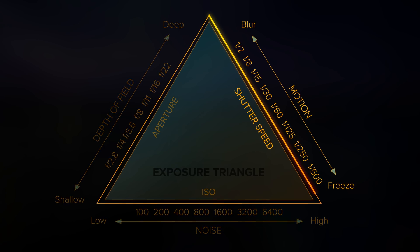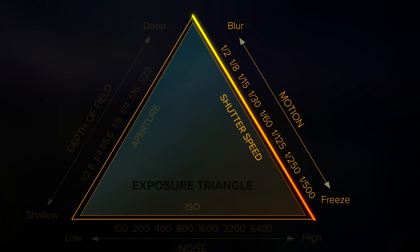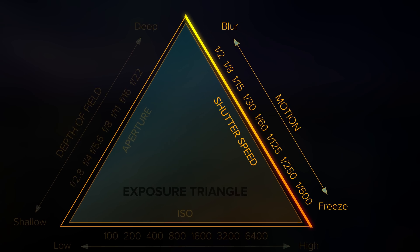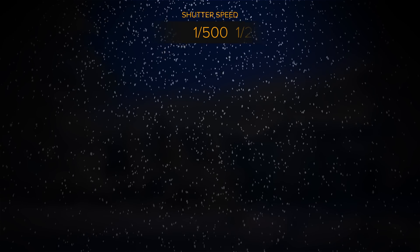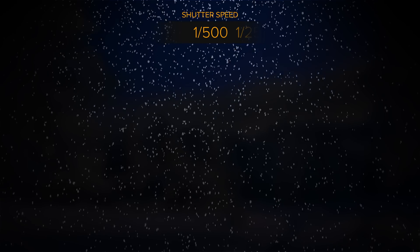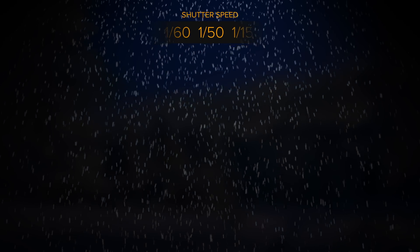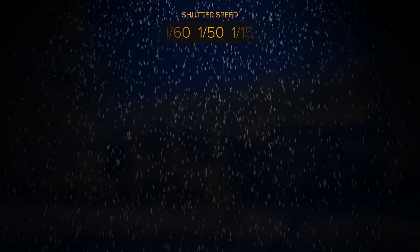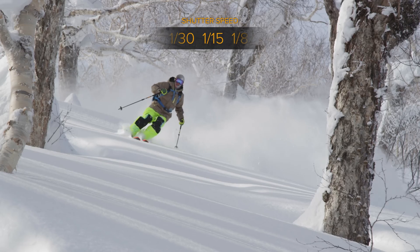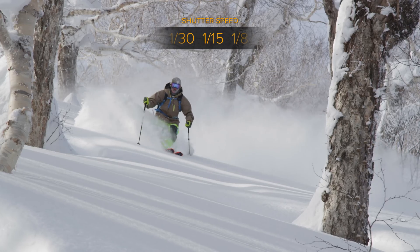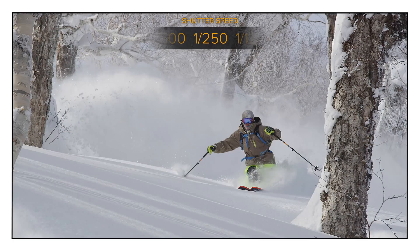Shutter speed refers to the amount of time that each individual frame is exposed. Shutter speed can have a very noticeable effect on the look of your video. A fast shutter speed such as 1/500th of a second will produce a series of very sharp frames that have a crisper look when played back. A slower shutter speed such as 1/50th of a second will produce a series of slightly blurred frames that have a much smoother look. If you are planning on using frame grabs as still photos, you will want to use a fast shutter speed to help increase the sharpness of each individual frame.